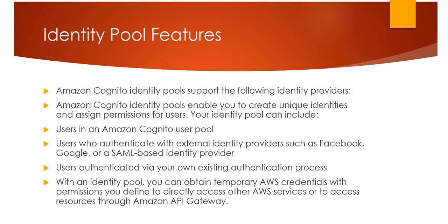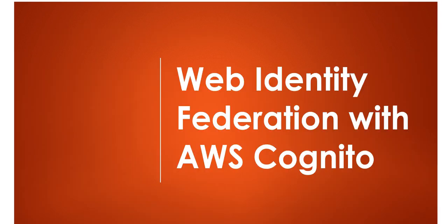Identity pool features: Amazon Cognito identity pools support the following identity providers. Your identity pool can include users in an Amazon Cognito user pool. It can also include users who authenticate with external identity providers such as Facebook. It can also include users authenticated via your own existing authentication process. Additionally, with an identity pool you can obtain temporary AWS credentials with permissions you define to directly access other AWS services or to access resources through Amazon API Gateway.